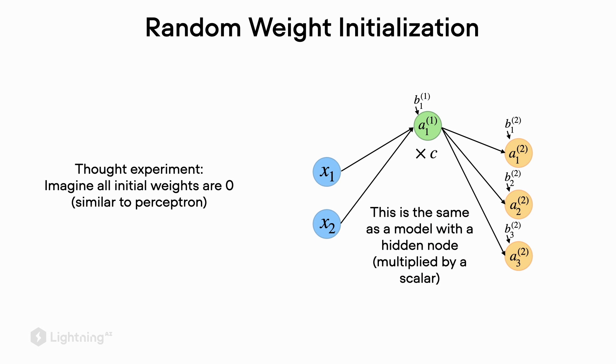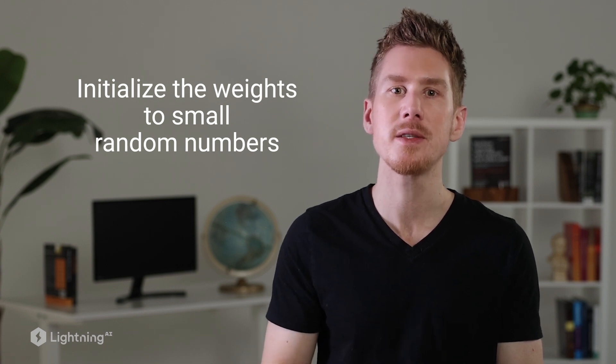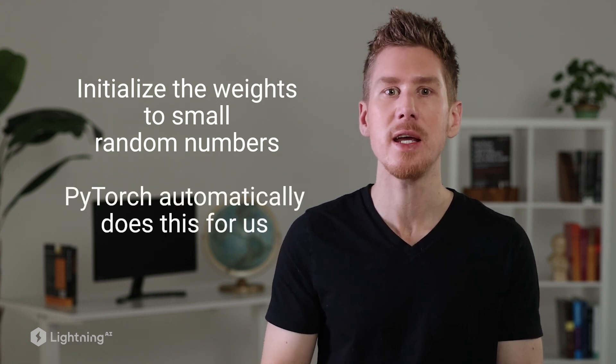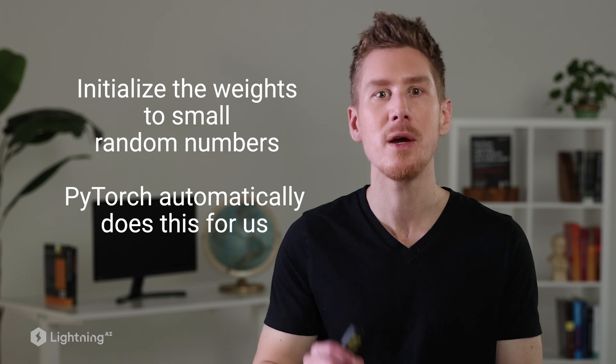For example, if we have five hidden units initialized to zero, we could represent the same network with just one hidden unit times five — and we lose all the advantages of a multilayer perceptron. The solution is to initialize weights to small random numbers. This breaks the symmetry so that all hidden units have different values. During training, as the network updates the weights, they will be optimized. The key is to start with small random numbers that differ from each other so there is no symmetry in the hidden layer.